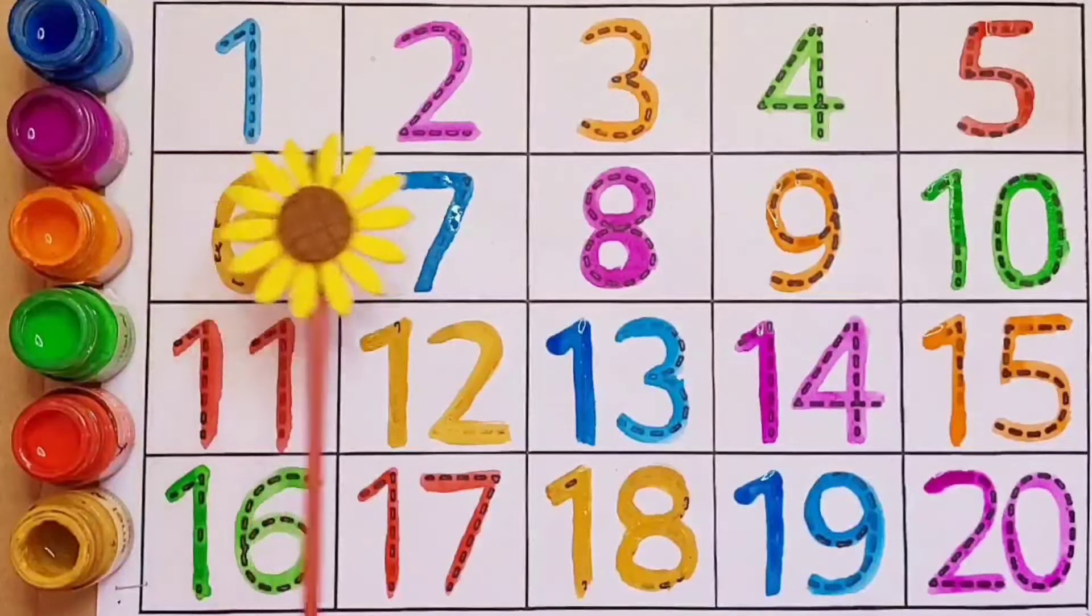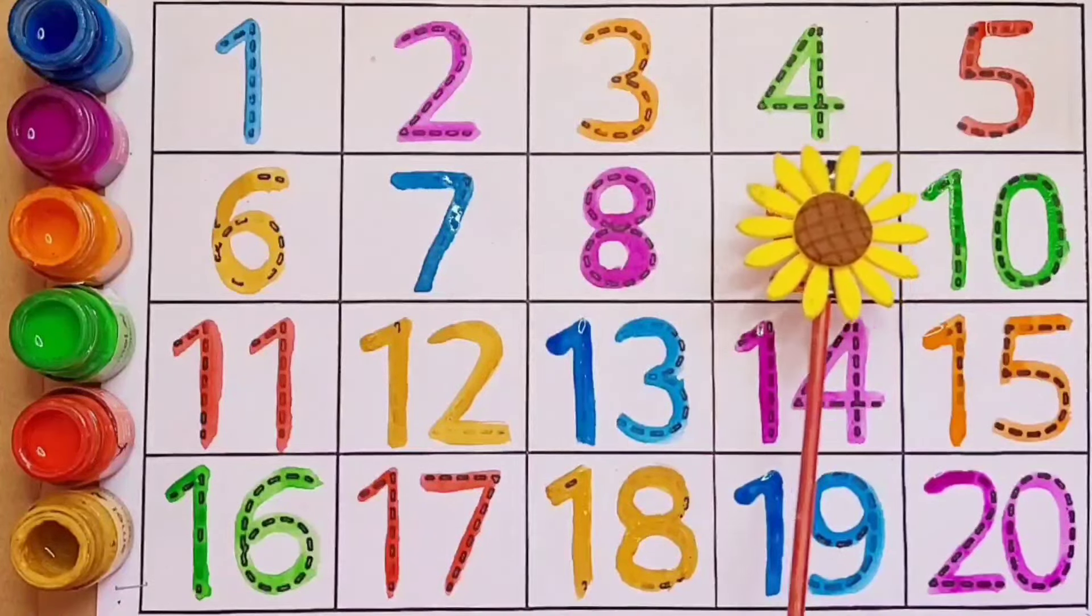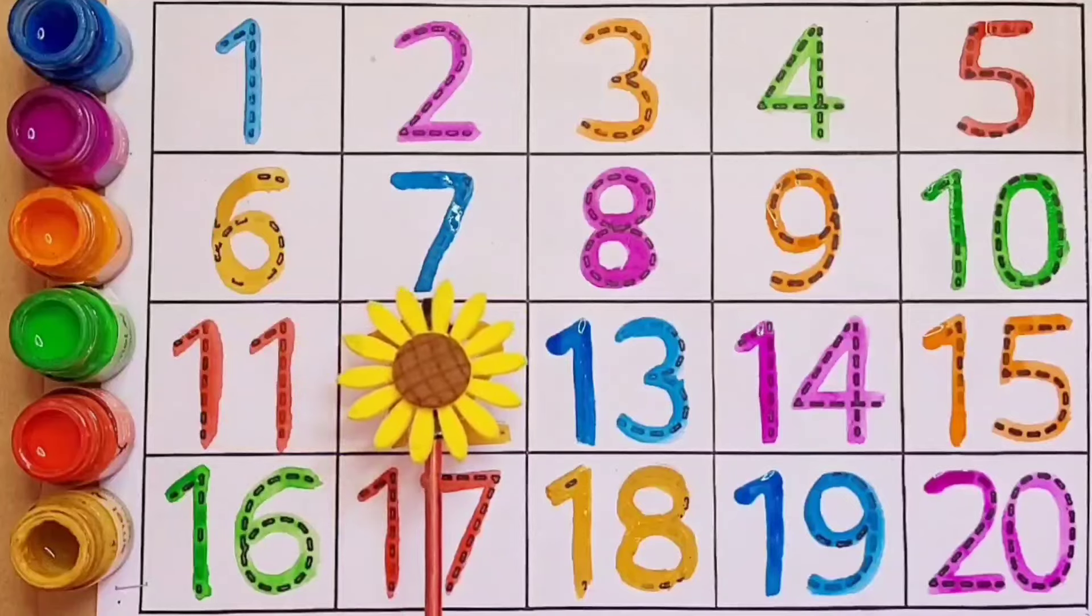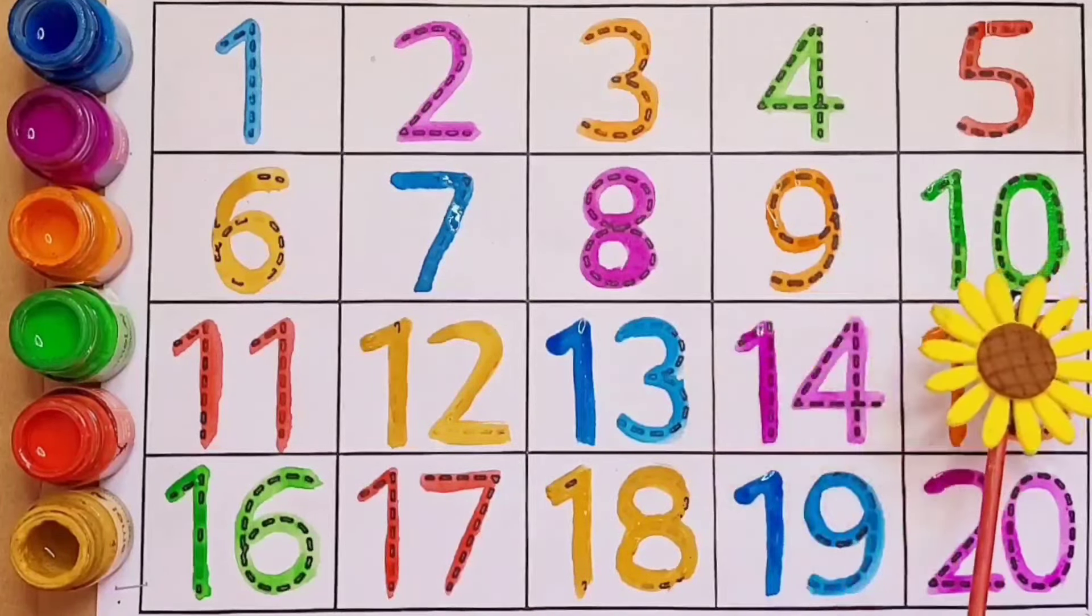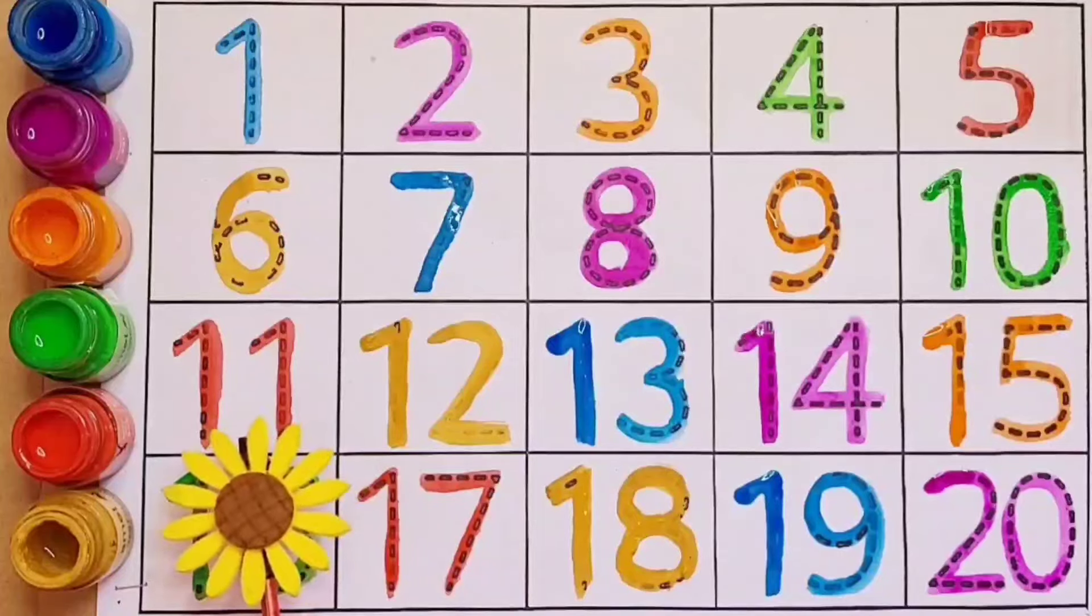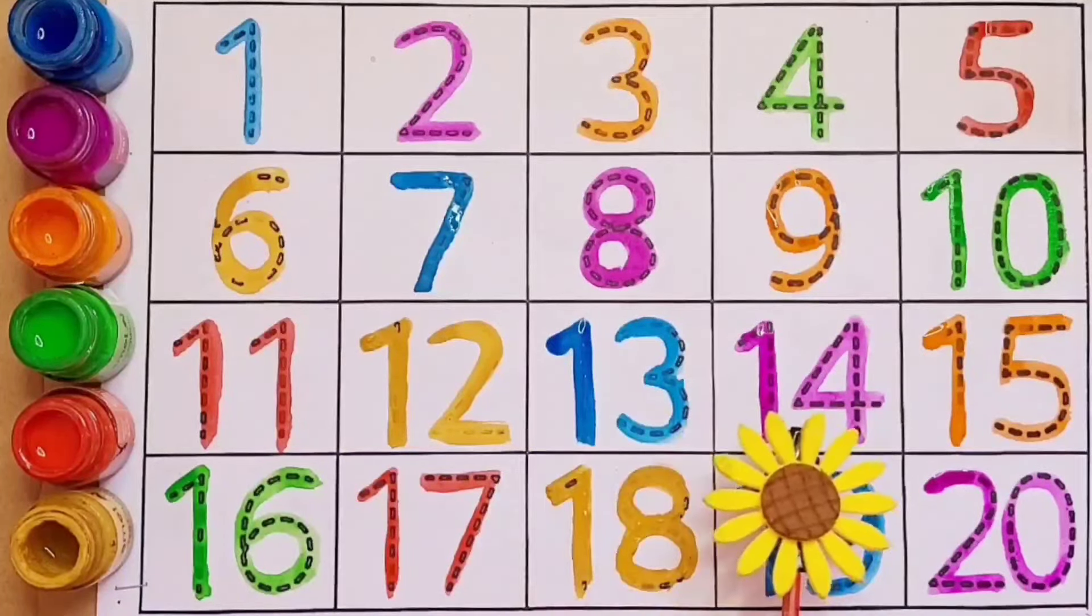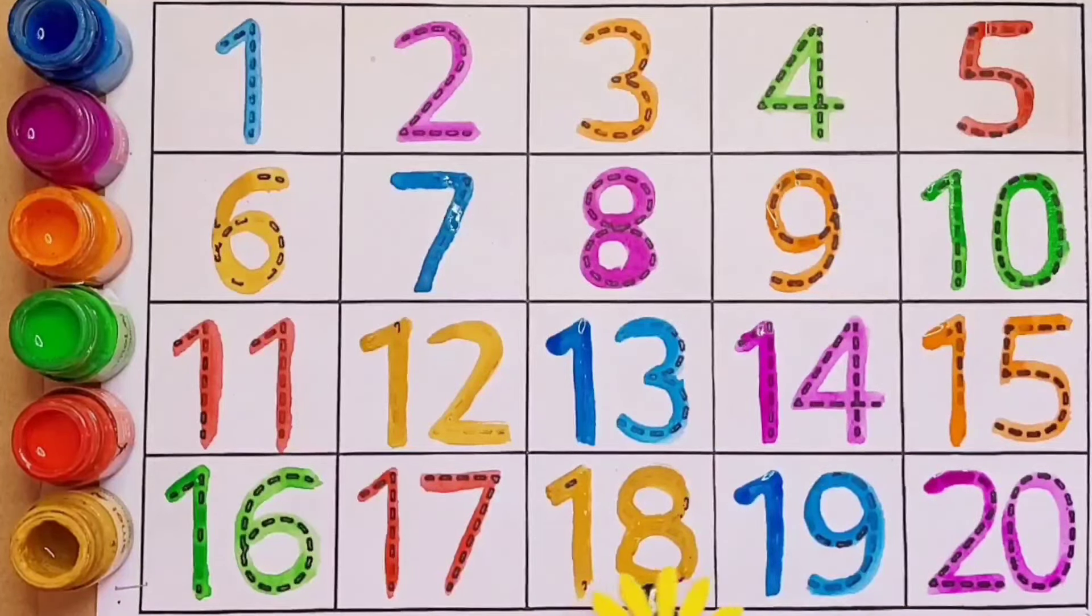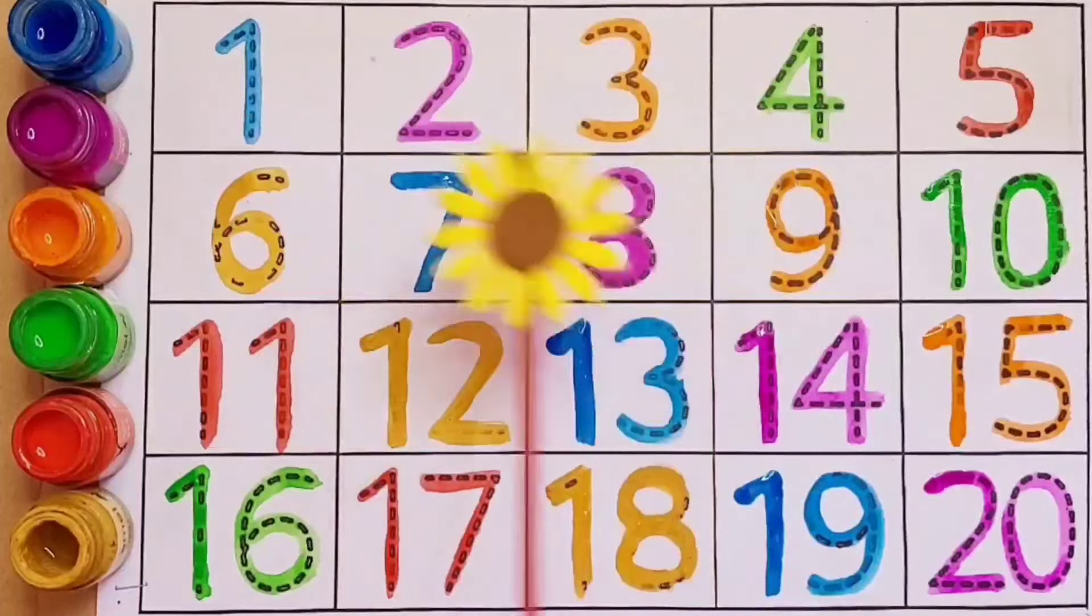One, two, three, four, five, six, seven, eight, nine, ten, eleven, twelve, thirteen, fourteen, fifteen, sixteen, seventeen, eighteen, nineteen, twenty. Okay kids.